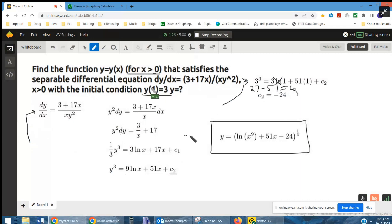So there is your formula after taking, substituting negative 24 for the constant and taking the cube root of both sides.